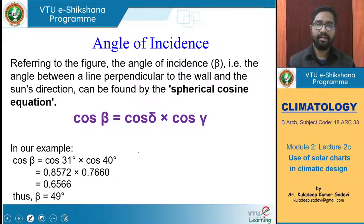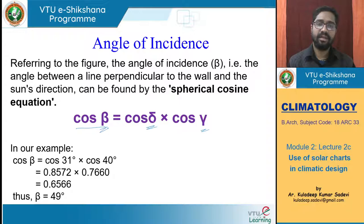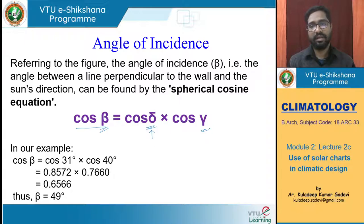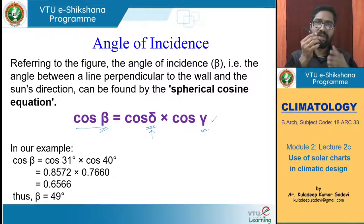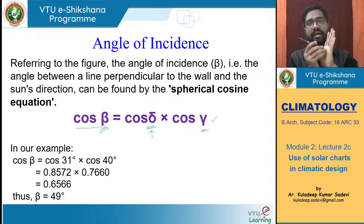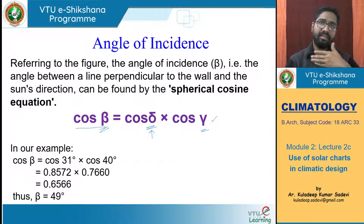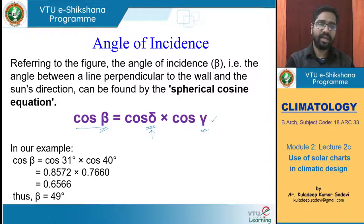By knowing delta and gamma we can calculate the angle of incidence (beta) for a particular wall. This angle changes if you change the orientation because delta changes. For example, if the solar azimuth is 239 degrees and the wall faces west at 270 degrees, then delta = 270 − 239 = 31 degrees. Once we know delta and solar altitude, we calculate beta using cos beta = cos delta × cos gamma.